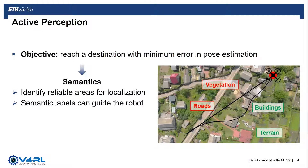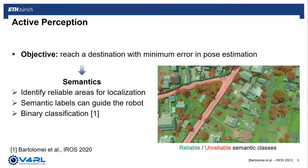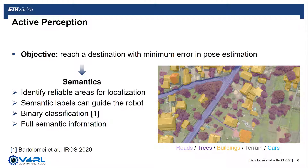In the literature, the current state-of-the-art uses a binary approach with respect to semantic classes, meaning it differentiates them depending on their usefulness for vision-based state estimation. In this work, we extend this idea and employ the full semantic information. The main concept is that the different semantic classes can carry different levels of perceptual importance, and using a binary classifier would be an oversimplification of reality. In order to deal with this richer semantic information, we use a deep reinforcement learning approach.